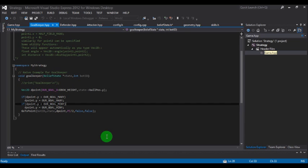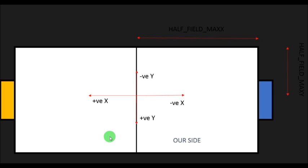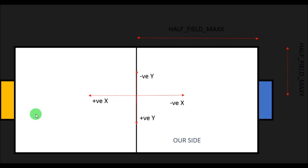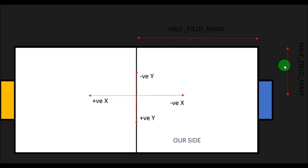First, let's understand the field configurations a bit. This is the field — this is the yellow side, this is the blue side, and currently I am on the blue team. The positive x direction moves away from me, and there is also negative x, positive y, and negative y. If this is the home team, then this would be positive x and negative y, and the entire thing rotates 180 degrees. This value is pre-computed — you just use the parameter half_field_maxX.